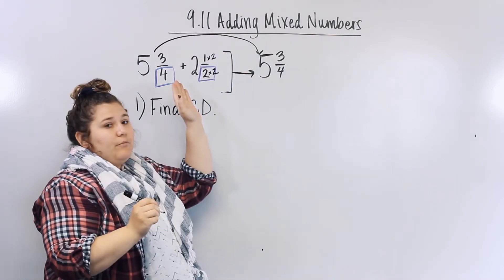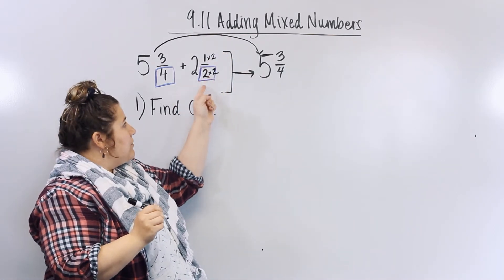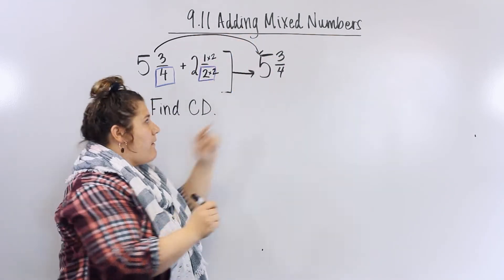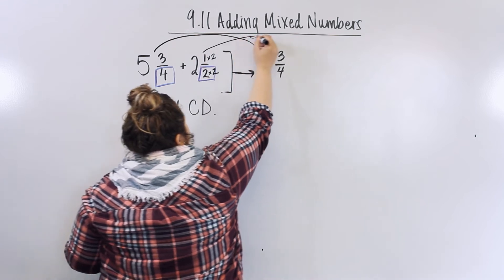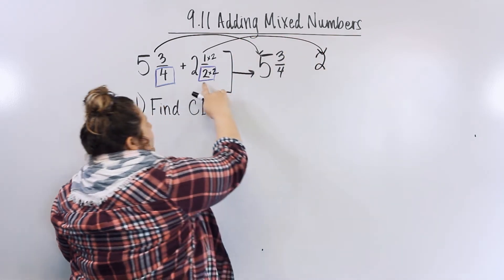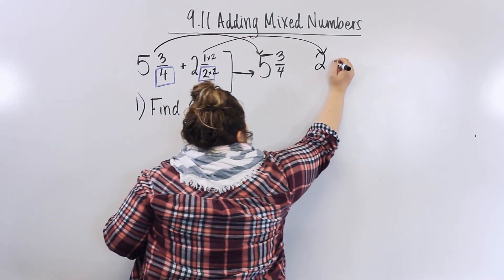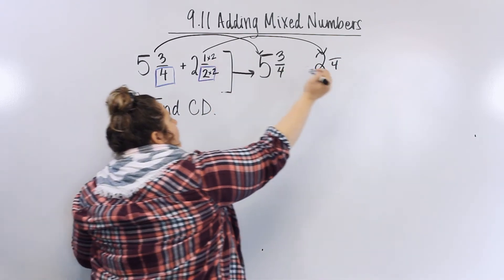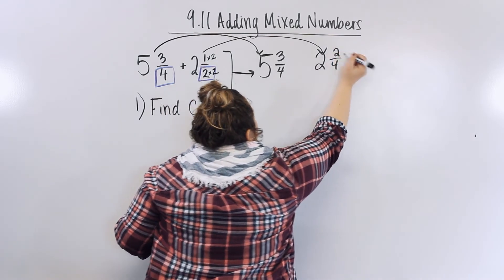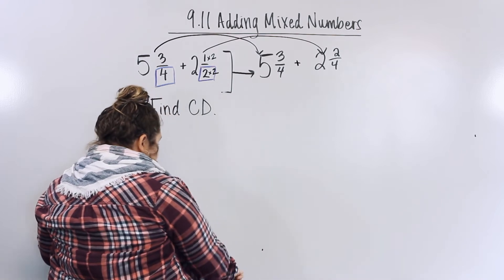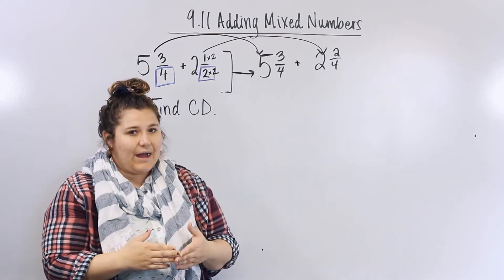Now I'm going to move this fraction with my new numerator and my new denominator to this side. So I'm going to move her over here. So I have 2, and then 2 times 2, 4 for my denominator. 1 times 2, 2. And we can't forget our plus sign. So now, we add.